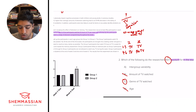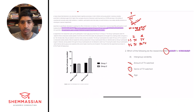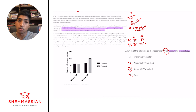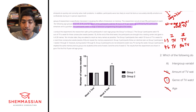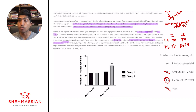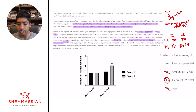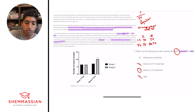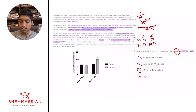Now intergroup variability — this refers to whether there are inherent individual differences between Group 1 and Group 2, like some participants naturally having higher or lower memory. The way the study accounts for this is that both groups start with an identical phase: both watch 15 hours of TV in weeks 1 through 3, and both complete the memory test at the end of week 3. This baseline comparison controls for intergroup variability. So intergroup variability is accounted for, and the answer is C, genre of TV watched. We're two for two.